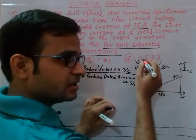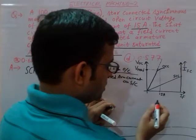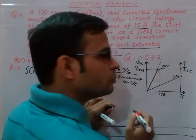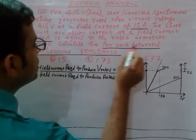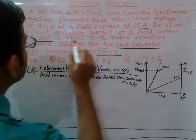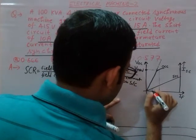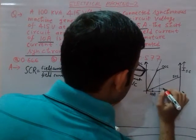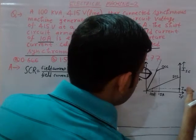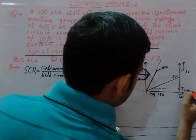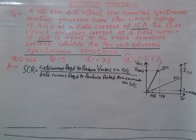On this axis I plotted short circuit current, and the horizontal axis is the field current axis. He says 10 amperes is that field current which is required to produce rated armature current at short circuit. So this 10 ampere value of field current is required to produce rated armature current on short circuit — let's call this I-rated.